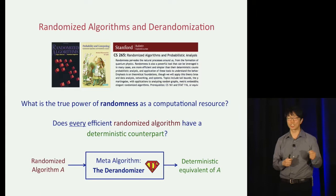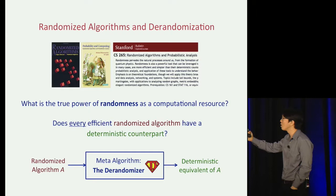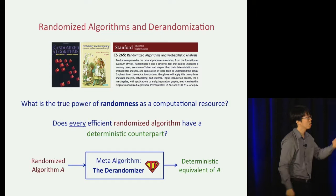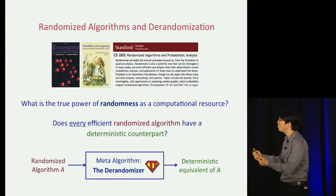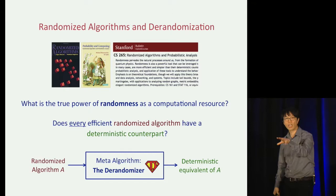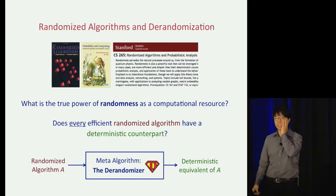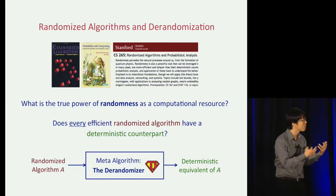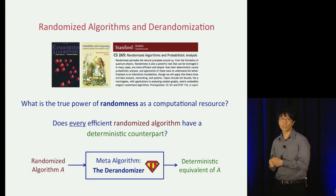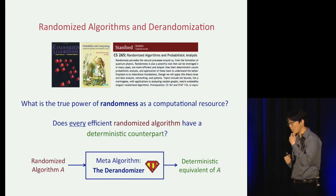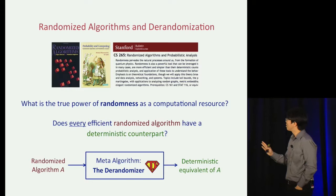More boldly, we can hope to prove this by designing a meta-algorithm I call the derandomizer, that behaves as follows: you take any randomized algorithm, feed it to this meta-algorithm, it thinks for a bit, and outputs a deterministic equivalent. Such a meta-algorithm may seem fantastical, but in complexity theory we have a fairly good understanding of how to build such an algorithm, and how its existence relates to central open problems like P versus NP. The area of derandomization within complexity theory is by now a broad field.